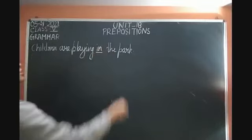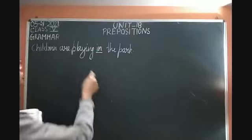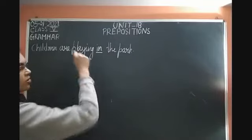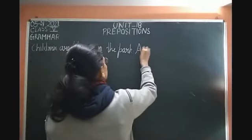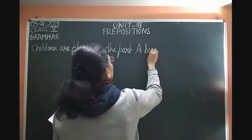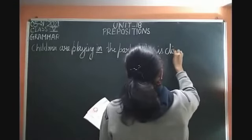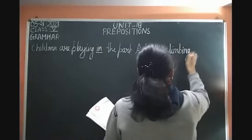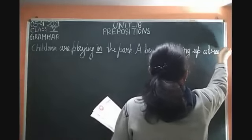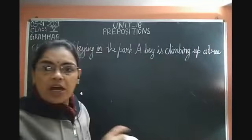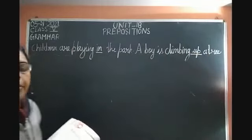So 'in' is a preposition — it is showing the relationship between two nouns in a sentence, and also telling us the place of the children. Now the second sentence: A boy is climbing up a tree. 'Boy' is a noun, 'tree' is a noun. Where is the boy climbing? Up a tree. So 'up' is again a preposition.